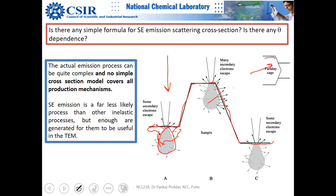There is no simple cross-section model for secondary electron emission because it can be a random walk — the sample is quite thick and outgoing electrons undergo many interactions.